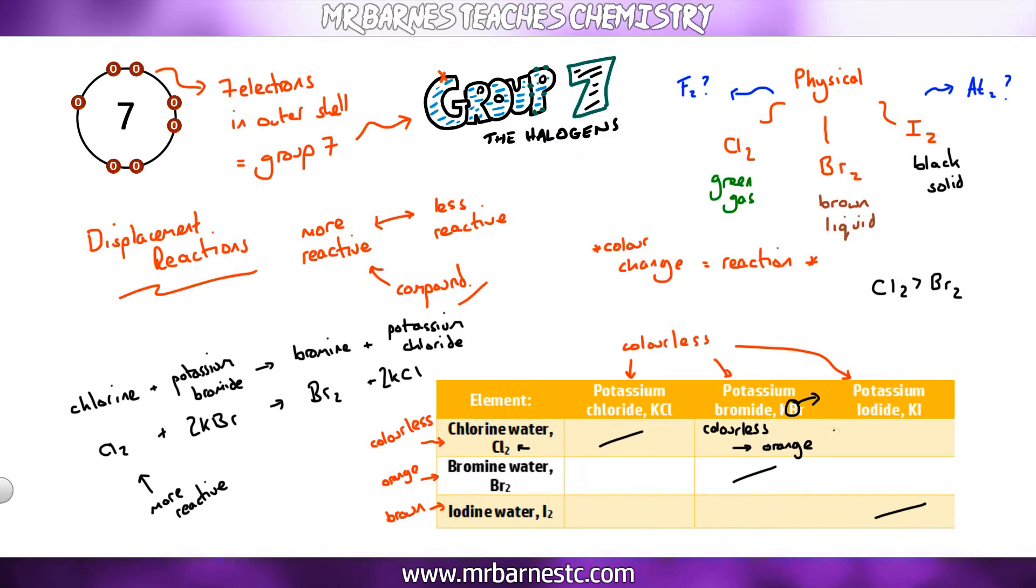If I do the same with chlorine reacting with potassium iodide the same thing happens. I see a colour change. It goes from colourless this time to brown. So I know that chlorine is more reactive than bromine and iodine and my word equation would be chlorine plus potassium iodide goes to iodine plus potassium chloride.